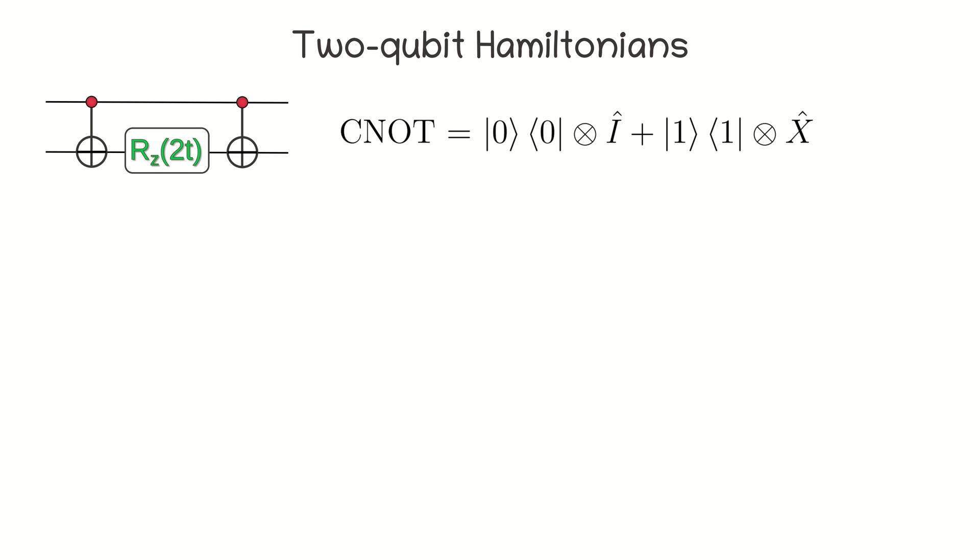To do this, we are going to use a CNOT operator written in the following form. Where C0 bra 0 and C1 bra 1 are the operators presented on the screen. We will now find out which operator is implemented by this quantum circuit. The CNOT gate, rotation of the second qubit around the Z axis, and another CNOT gate.